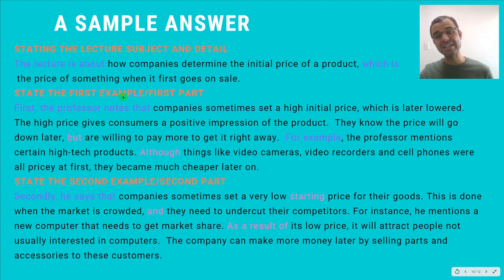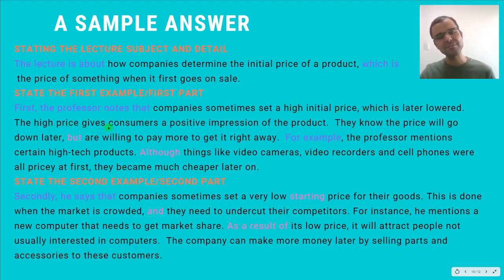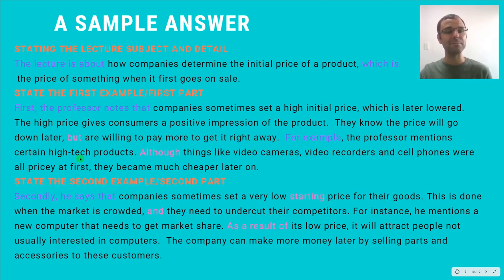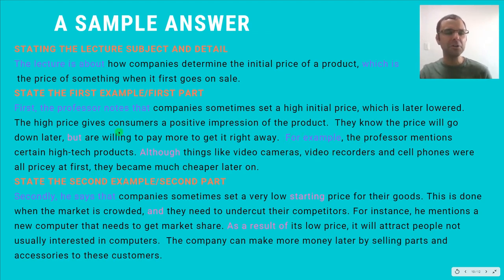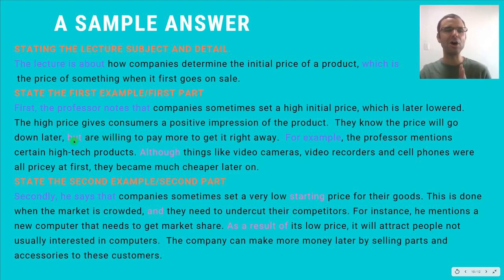Next I state the first example or the first part — this is a question with two clear examples, which is most common. First, the professor notes that companies sometimes set a high initial price which is later lowered. The high price gives consumers a positive impression of the product. They know the price will go down later but are willing to pay more to get it right away. For example, the professor mentions certain high-tech products — although things like video cameras, video recorders, and cell phones were all pricey at first, they became much cheaper later on. I used although — a nice discourse phrase — and but to create a compound sentence.